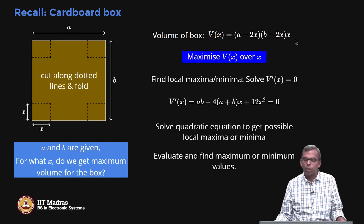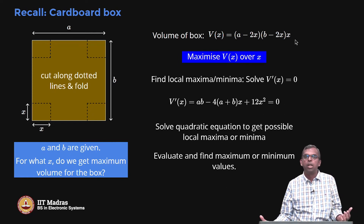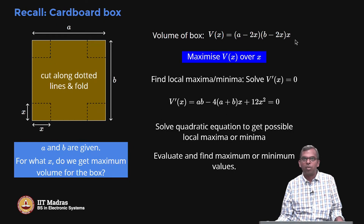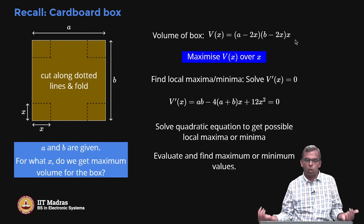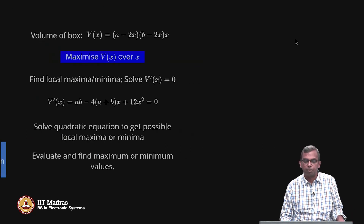You solve the quadratic equation, get two values for x, substitute both into V(x), and only one will result in a valid maximum — that is the maximizing x. Any maximization or minimization problem: differentiate, equate to 0, solve. Even if you cannot solve manually, numerical tools and computer programs can solve it. Finding all local maxima and minima also lets you find the global maximum.